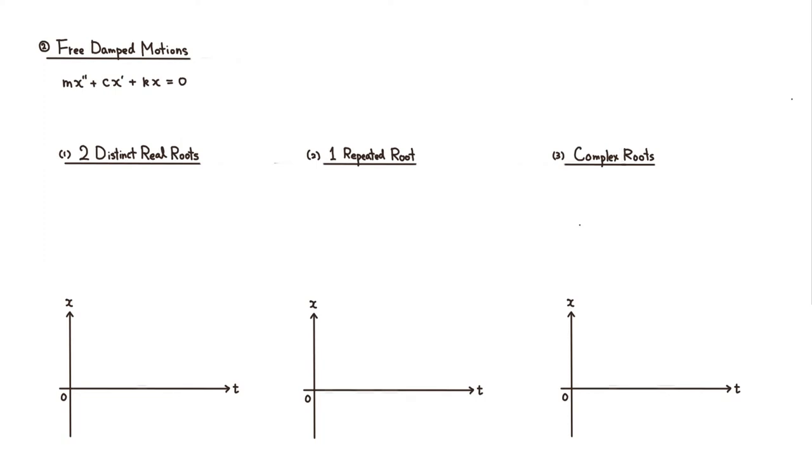Alright, let's look at the free damped motions. So we put the dashpot back in. So the equation is mx double prime plus cx prime plus kx is equal to zero.